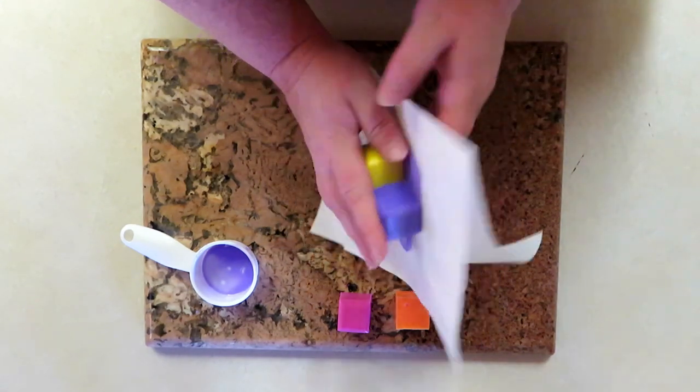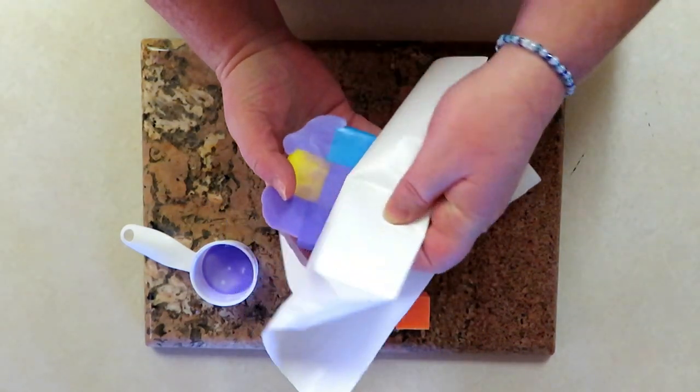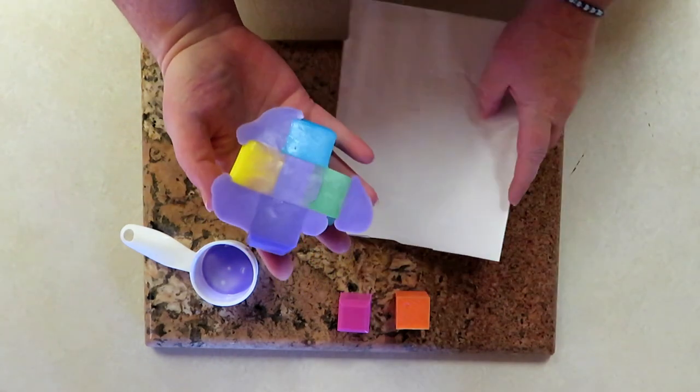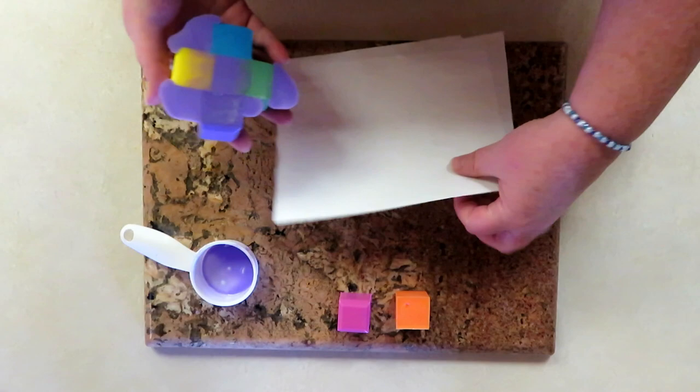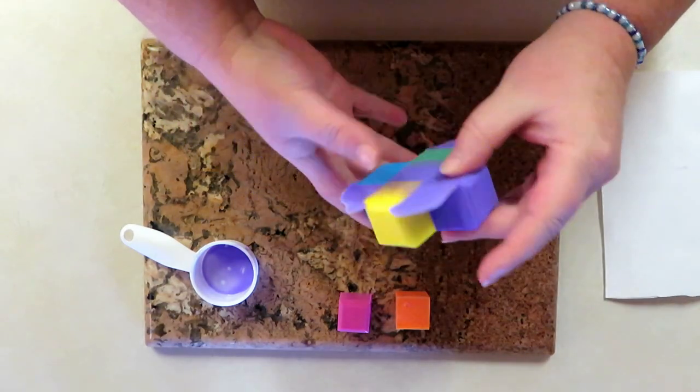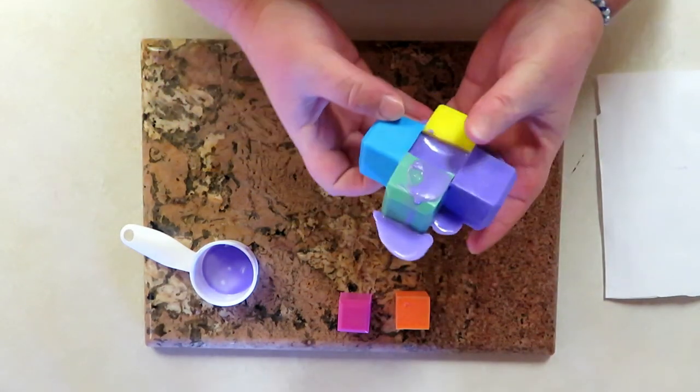Now that this has set up enough, let's peel it off of the freezer paper. Came off really nice. I mean, that's why I love using the freezer paper, because it just comes off so well. Now you see all those mistakes right there - that's what we're going to clean up.